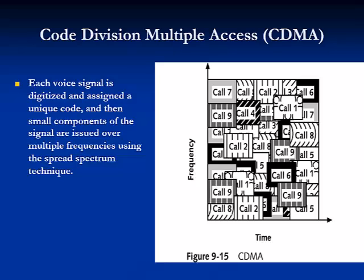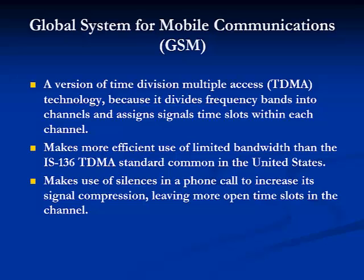Code division multiple access, or CDMA, is another digital second-generation mobile wireless access technology. CDMA divides each channel into small components that are issued over a range of frequencies using the spread spectrum technique. A version of TDMA technology is the Global System for Mobile Communications, or GSM. GSM makes more efficient use of limited bandwidth than the TDMA standard common in the United States and is mostly used in Europe. It also makes use of silence in a phone call to increase signal compensation, leaving more open time slots in the channel.